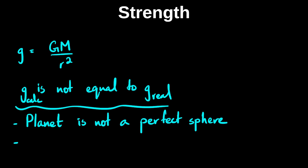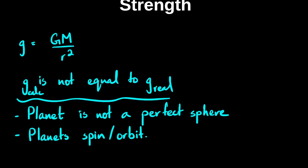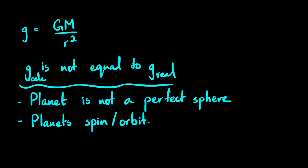Another reason is that planets spin. This spinning or orbiting also causes the gravitational field strength to slightly change. In one of the questions we'll do, we'll actually link this with centripetal force.